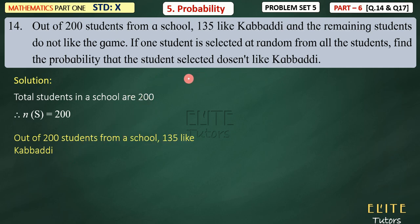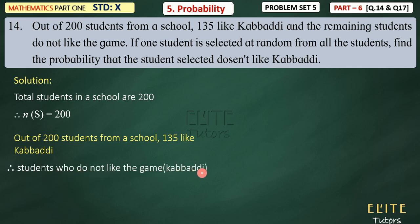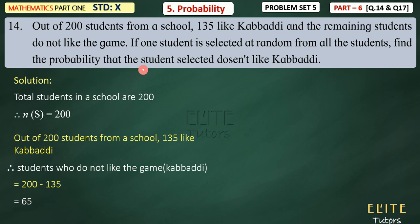So who doesn't like it? Therefore, students who do not like the game — buddy — equals 200 minus 135, which gives us 65. These are the kids who don't like the game. And this is also what is asked: find the probability that the student selected doesn't like a buddy. 65 don't like it out of 200. We have to write it in probability format.